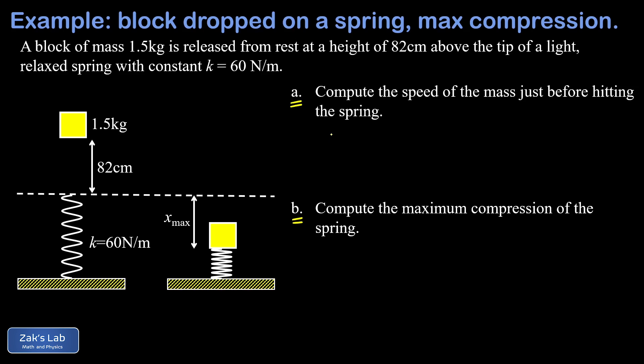So starting with part a, getting the speed of this block right before it hits the spring, that's a quick energy conservation problem where we just have gravitational potential energy converting into kinetic energy. For the analysis, I'm going to put the origin of the y coordinate at the tip of the spring. That means the lowest point of the block has zero gravitational potential energy and that just simplifies the equation a little bit.